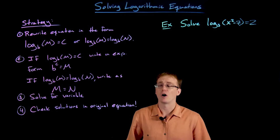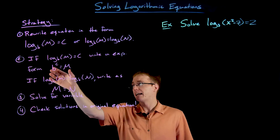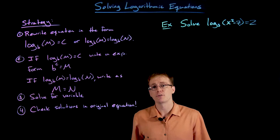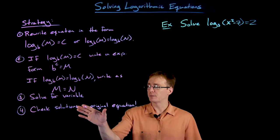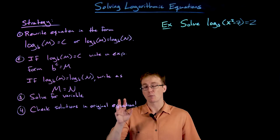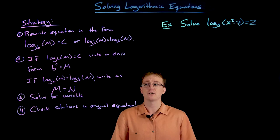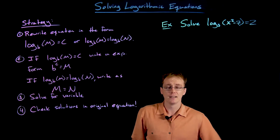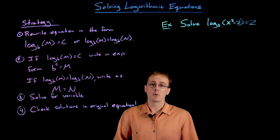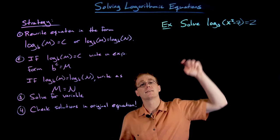Depending on the form we can get our logarithmic equation into, we rewrite it accordingly, which lets us move on to step three and solve for our variable. Then there's a fourth step that we did not need for exponential equations: we are required to check our solutions in the original equation, because using log properties to manipulate things can produce extraneous solutions. We have to plug our solutions into the original equation and make sure the input does not turn into a negative number.